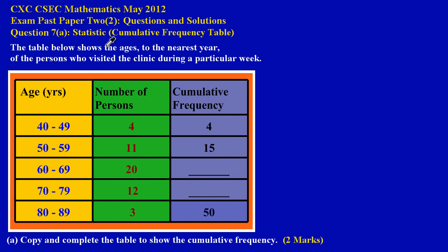In question 7a, a typical statistics question, they're asking us to fill out a cumulative frequency table. The table shows the ages to the nearest year of persons who visited the clinic during a particular week. In the first column (yellow) we have the ages, in the second column (green) we have the number of persons who visited the clinic, and in the third column (light purple) we have the cumulative frequency.